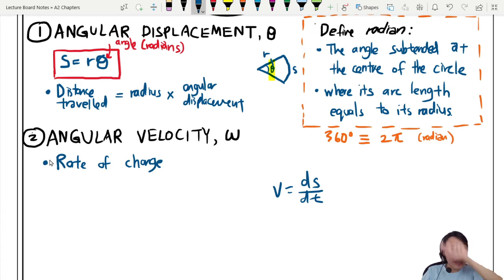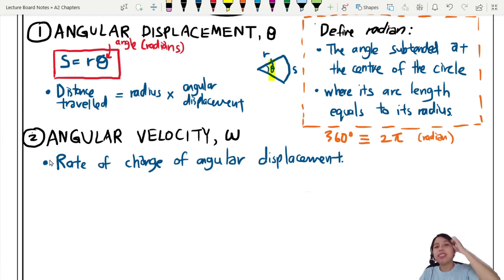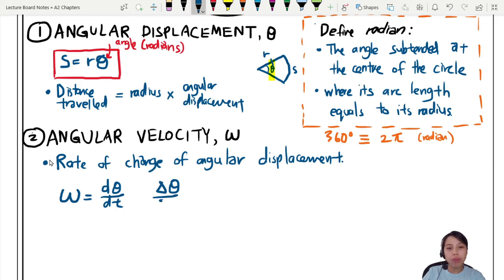Last time we will say velocity v is rate of change of displacement. That's how we define linear velocity. Now we tweak our language a bit. We say angular velocity, this is the rate of change of angular displacement. So we drop off this one. So it cannot be v equals ds dt already. It's something else. So when we derive it, we usually say angular velocity, rate of change, you can either say d theta dt. Sometimes people write as delta change in angle over change in time. I prefer to write d theta dt because it's more mathematically correct.